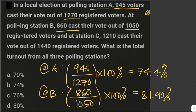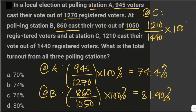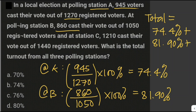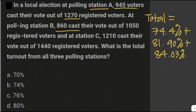For station C, that is 1,210 out of 1,440 registered voters times 100%, which gives us 84.03%. To find the total turnout from all three polling stations, we add up all the percentages: the percentage from station A, plus station B, plus station C, then divide by 3 to get the average.